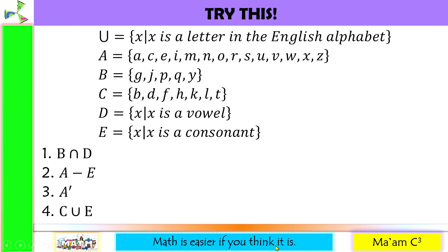Try this. The universal set is the set of all letters in the English alphabet. Set A contains the short letters: A, C, E, I, M, N, O, R, S, U, V, W, X, and Z. Set B contains the fall letters: G, J, P, Q, Y. Set C contains the tall letters: B, D, F, H, K, L, T. Set D is the set of all vowels, and set E is the set of all consonants.